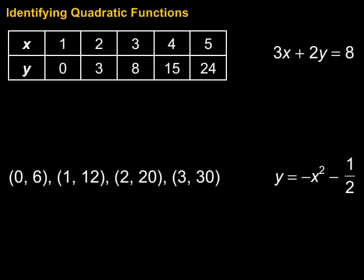In this video, we're going to take a look at a couple different ways in which you can identify whether functions are quadratic or not. For this first group, we've got a table that lays out some ordered pairs that could make up a function, and we want to tell if it's quadratic or not. We do that by looking at the second differences of the range value — the y — and if that is consistent, if that's constant, then we have a quadratic function.